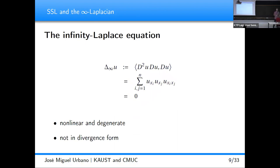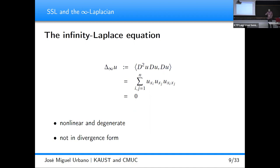What is the infinity Laplace equation? The infinity Laplace equation is a highly degenerate nonlinear operator in non-divergence form. You have a combination of first order and second order derivatives. It's called the infinity Laplace because it appears as a limit when P goes to infinity in the P-Laplace equation. Let me show you how we derive this in a heuristic way.